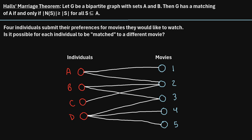For example, Individual A says they're willing to watch movie one or movie two — that's their preference, they would watch either of those movies. Individual B says they would watch movie two or movie three. Individual C says they're only willing to watch movie two. And Individual D says they would watch movie three, four, or five.